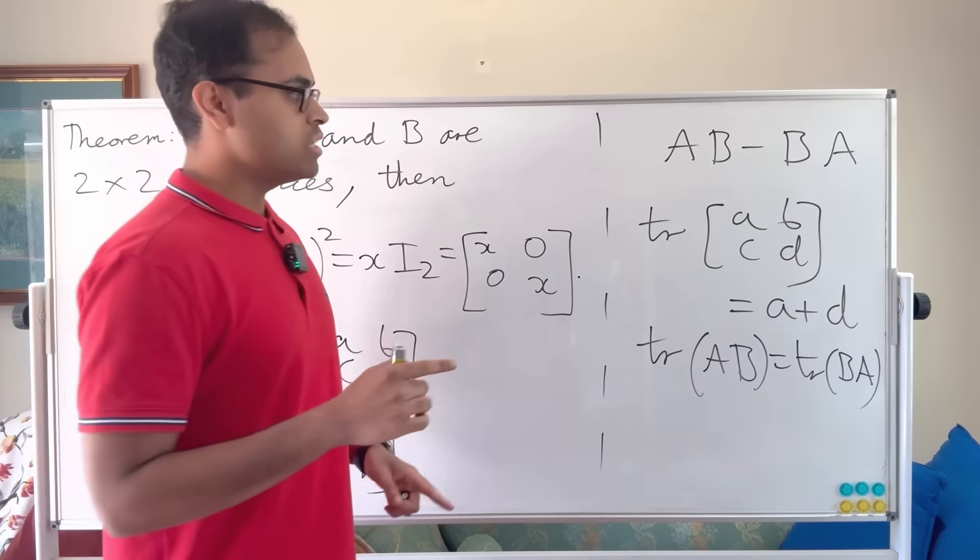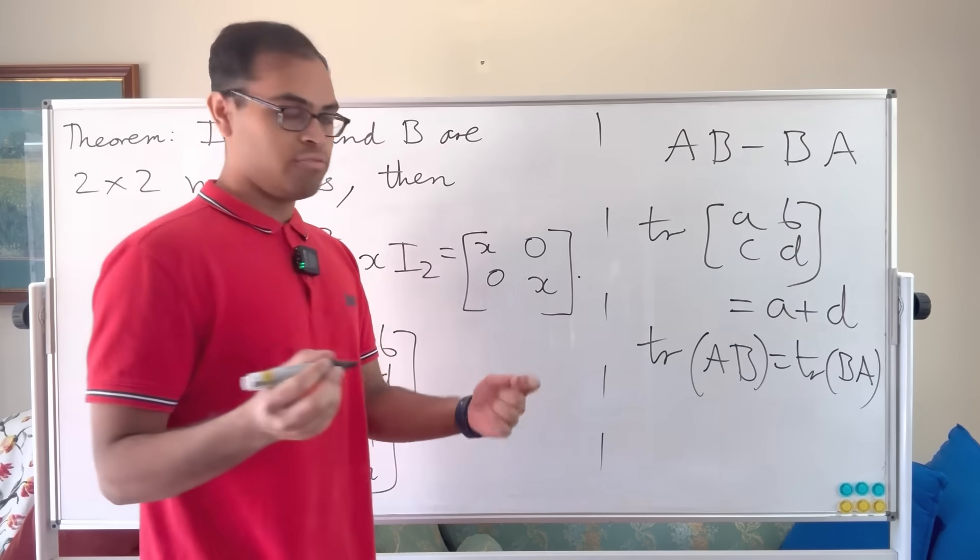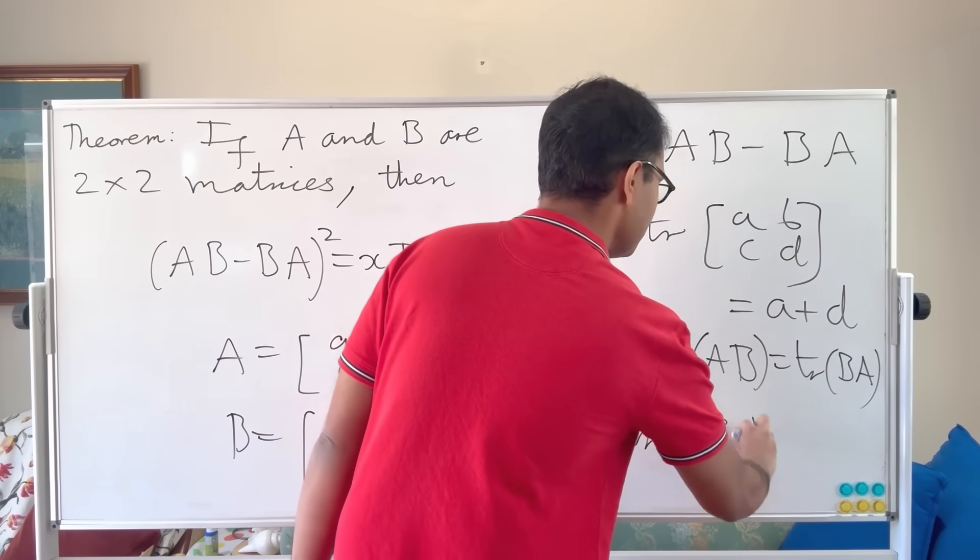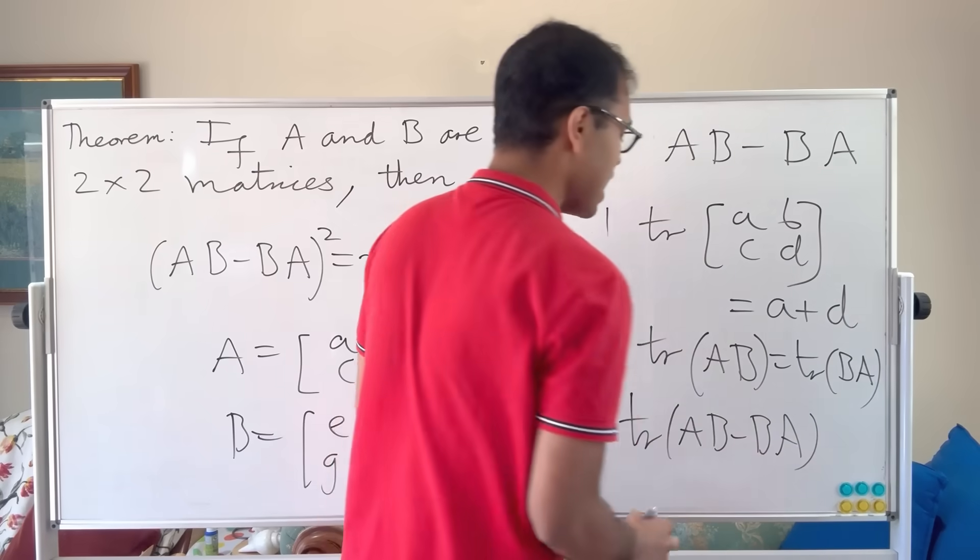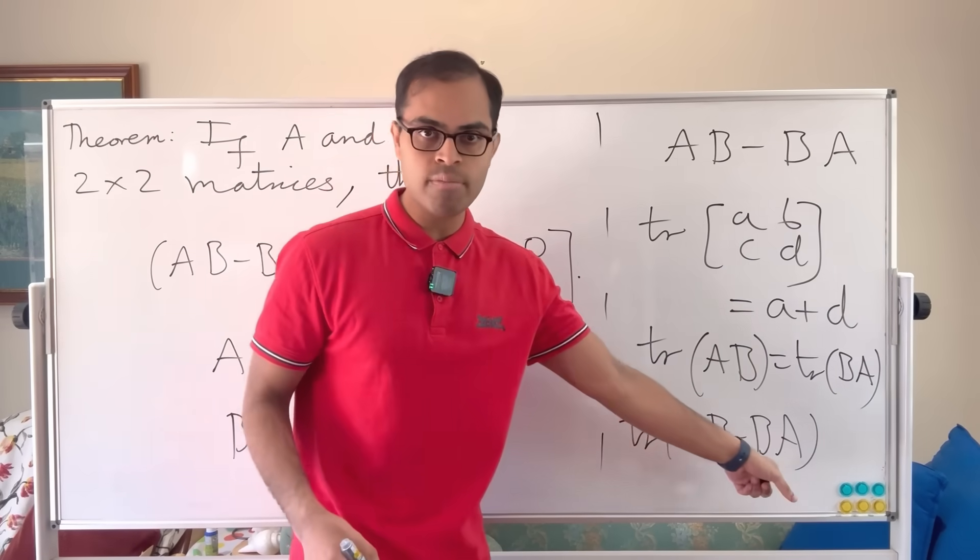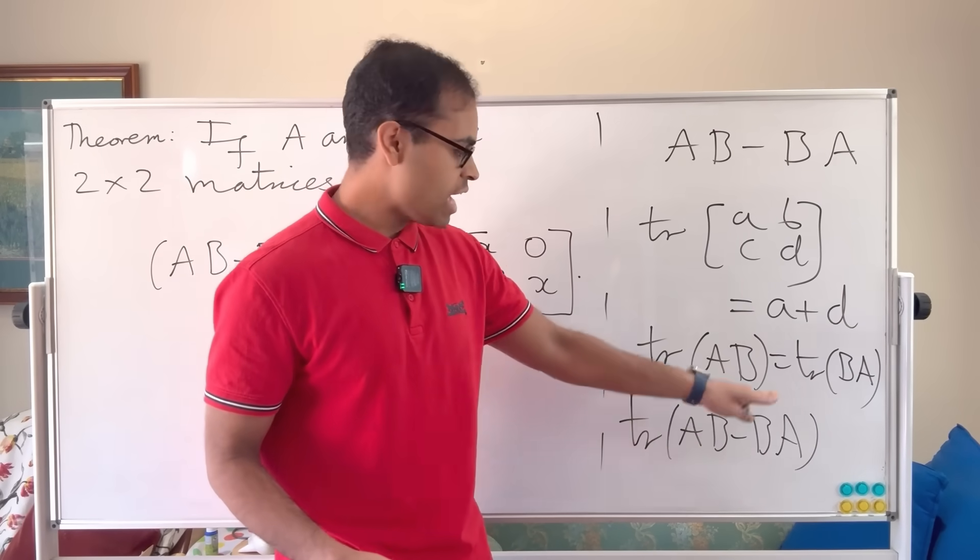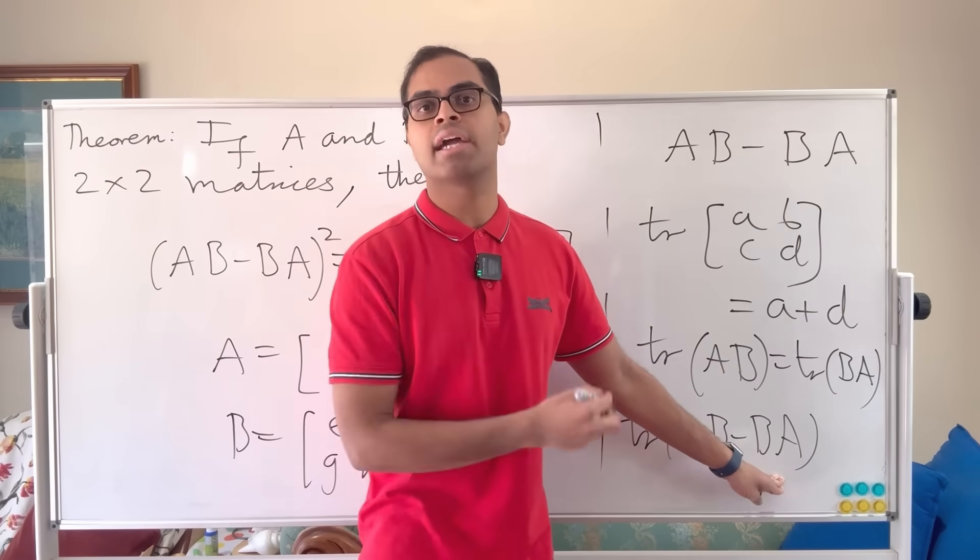And because of this statement, because the trace is additive, so what that means is if you add up matrices like AB minus BA, if you imagine how the diagonal entries are formed in the matrix difference, it's just adding up the diagonal entries of AB and subtracting off adding up the diagonal entries of BA.